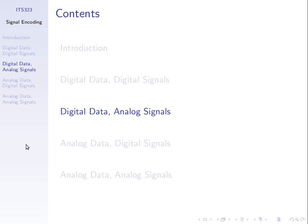We finished before the midterm on one of the signal encoding techniques, one of the four. We have data and we want to send data as signals. We have two types of data, analogue and digital, and two types of signals, analogue and digital. Therefore we have four combinations of how we can map the data to signals. We looked at just one of them — digital data to digital signal — two weeks ago. Today we're going to look at the other three alternatives for sending data as signals.